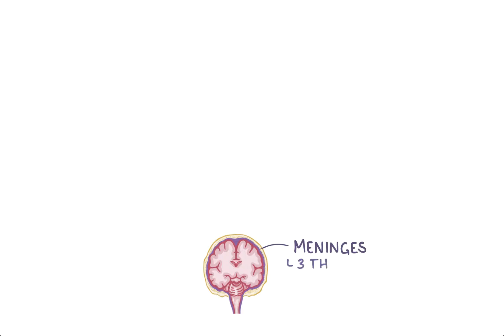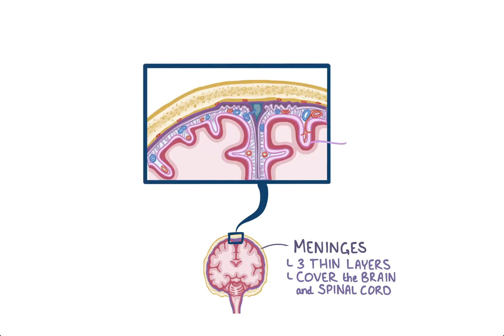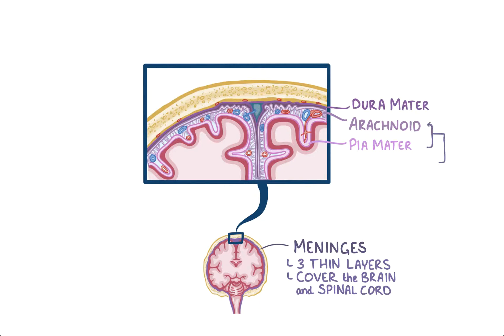Let's start with some basic brain anatomy. The brain is protected by the meninges, which are three thin layers of tissue that cover the brain and spinal cord. The inner layer of the meninges is the pia mater, the middle layer is the arachnoid mater, and the outer layer is the dura mater. The pia and arachnoid maters are also called leptomeninges.